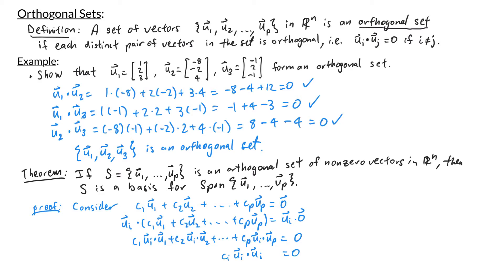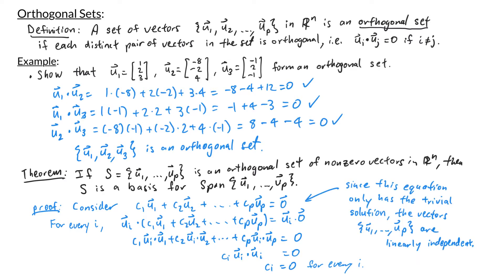Since ui is not the zero vector, ui·ui is not zero, so this forces ci = 0. Doing this for every i from 1 to p, we conclude that ci = 0 for every i, meaning u1 through up are linearly independent. Therefore S is a basis for the span of u1 through up.